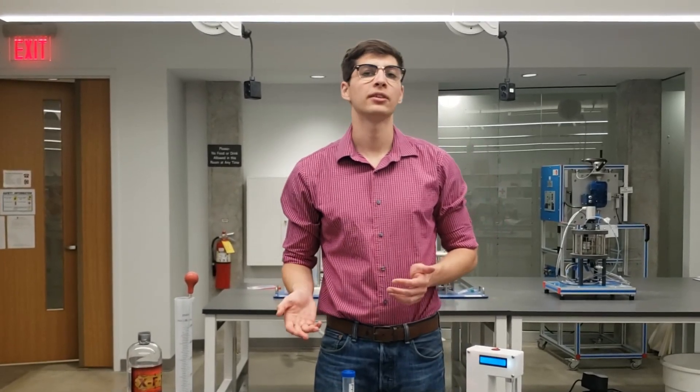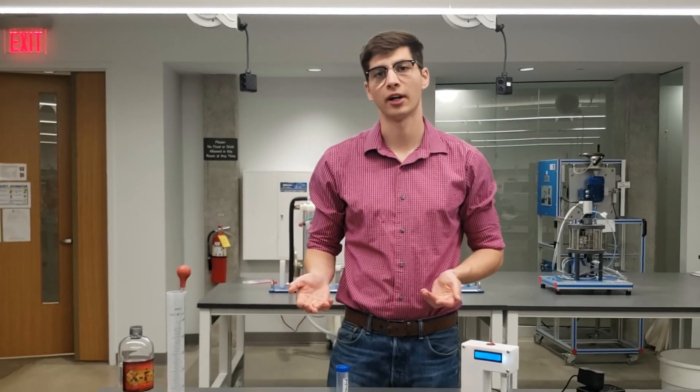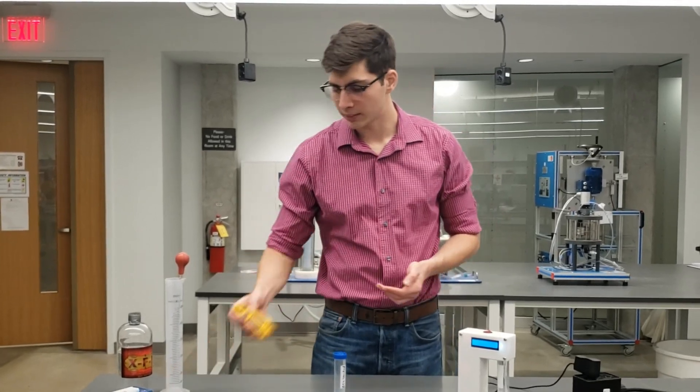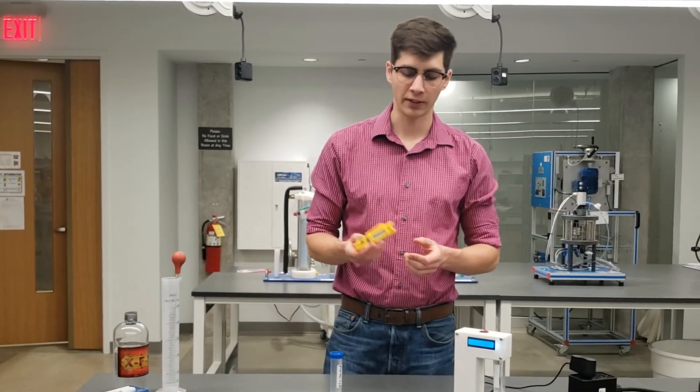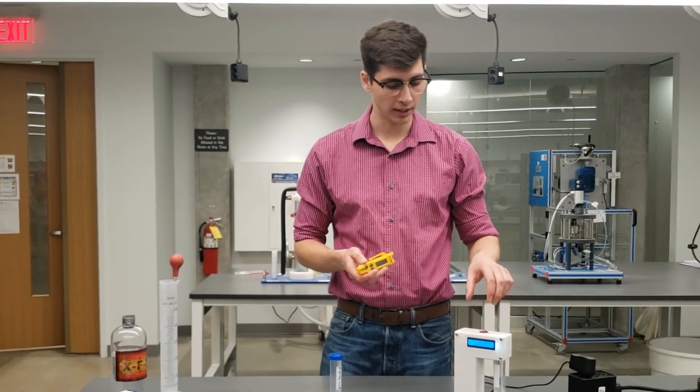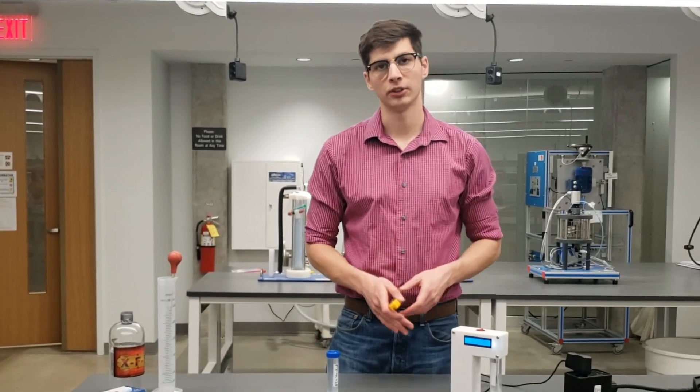However, there are a couple of pieces of equipment that I would recommend having that you probably already have laying around. The first piece of equipment that I would recommend having is a separate temperature probe. Now these are really cheap on Amazon, I think this was like $15, and there is actually an integrated temperature probe in the detector when you read your samples.